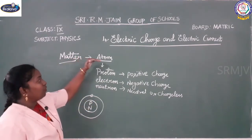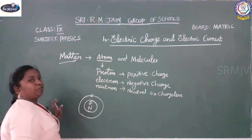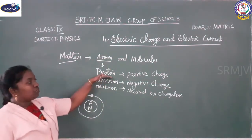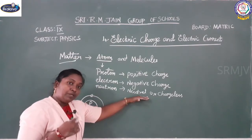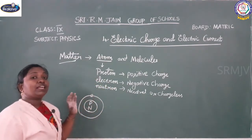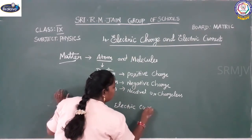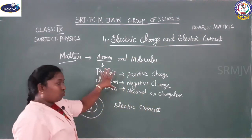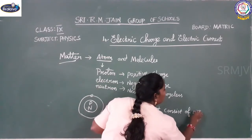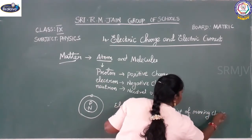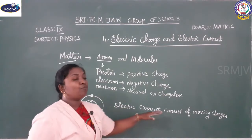All things which are made of matter — the matter is made up of atoms and molecules. The atom is made up of protons, electrons, and neutrons. Proton carries a positive charge, electron carries a negative charge, and neutron is neutral or chargeless. Based on this, an electric current consists of moving charges.